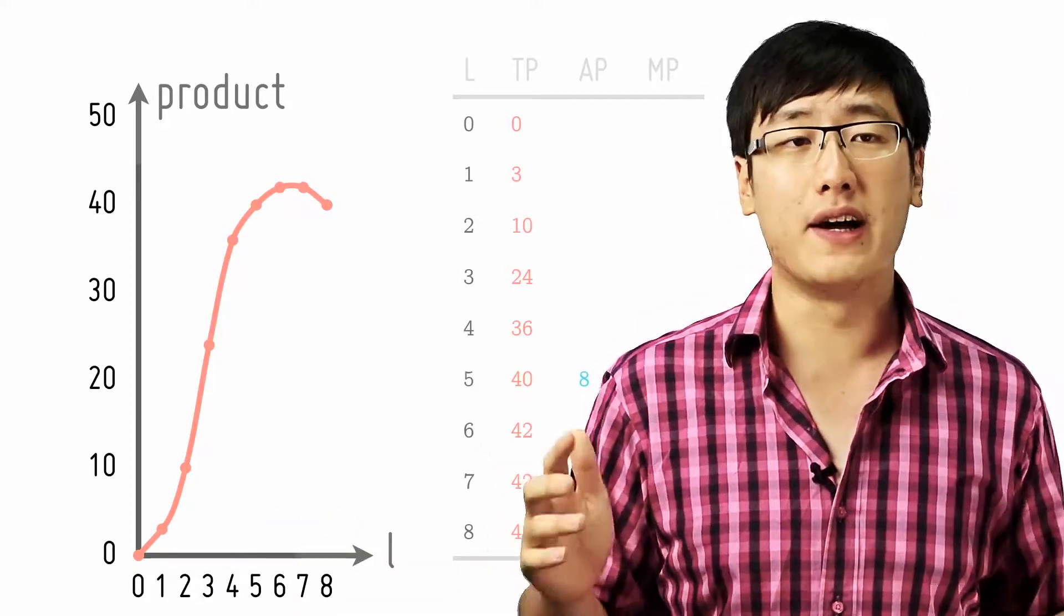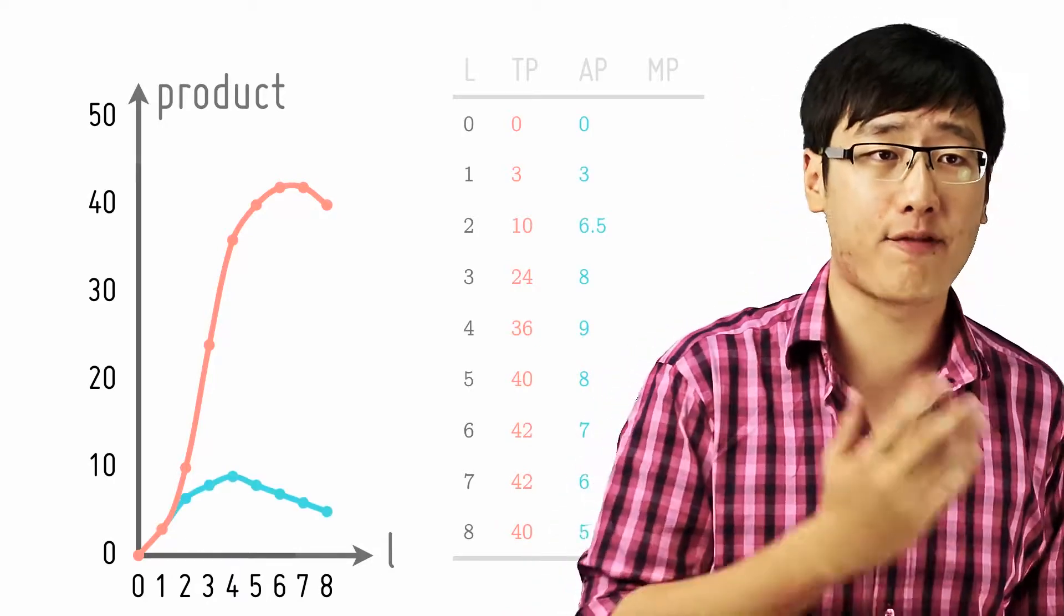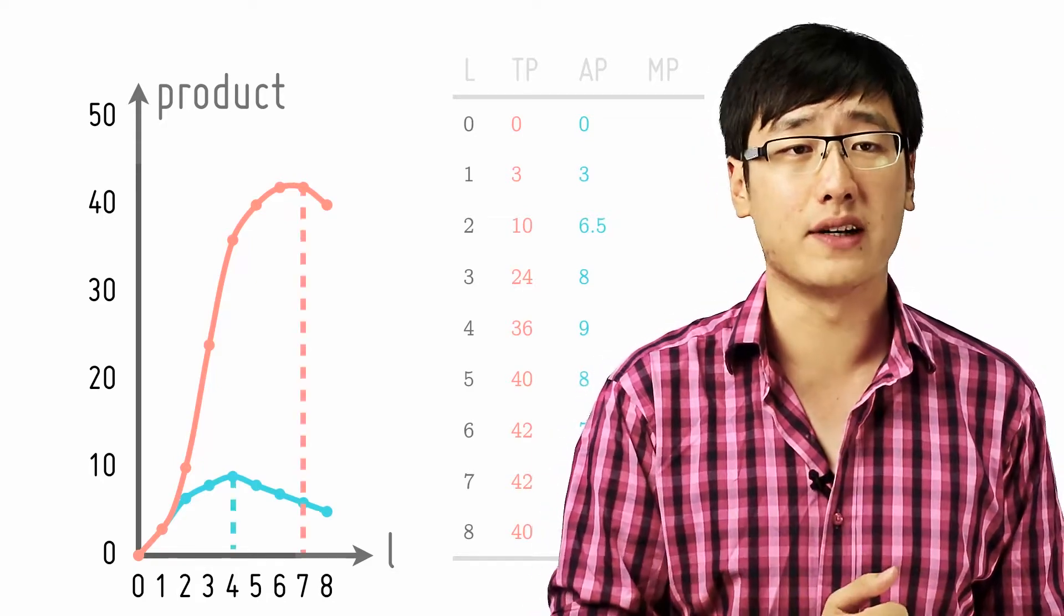When you do this for every worker number you see something interesting. Now your average product peaks at 4 workers but your total product peaks at 7 workers. What's going on here?